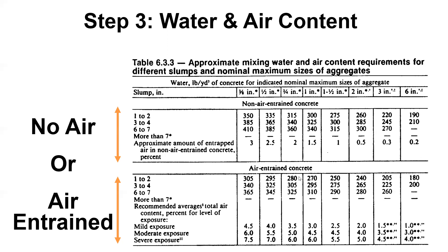For air-entrained concrete it works the same way. If you're using three-quarter inch rock and pumping with a six inch slump, 325 pounds of water would be the recommendation. You then need to figure out your air content — if it's given, say 6.5%, use that. If you need to find it and you're using three-quarter inch rock in a severe exposure case, you might be at 6.0% air.